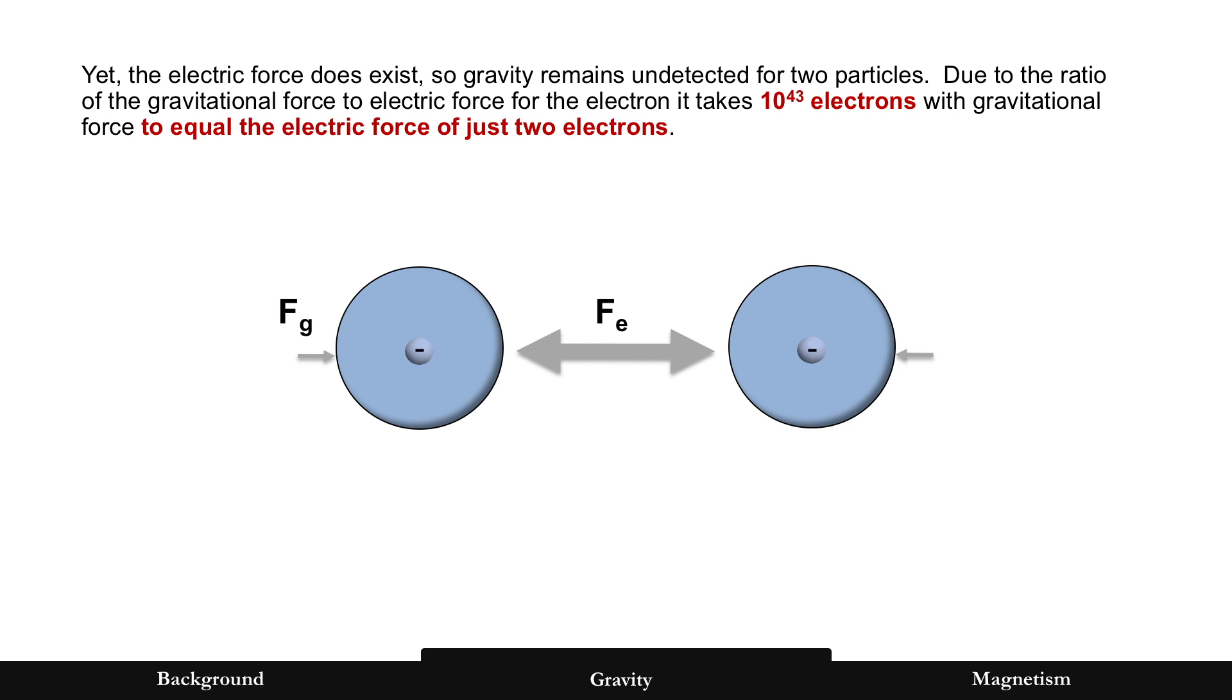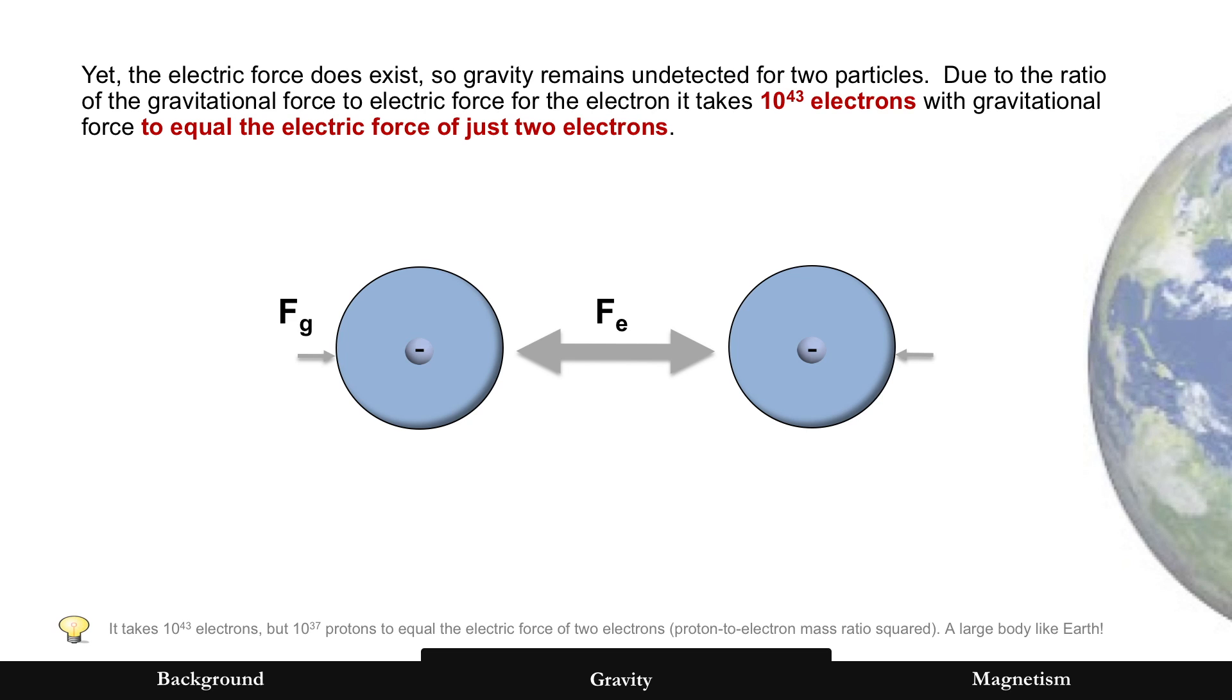But the electric force does exist. So gravity remains undetected for two particles. And remember that ratio, the ratio of the gravitational force to electron force. It would take 10 to the 43 power number of electrons with gravitational force equal just the electric force of two electrons. We're going to be showing atoms later. So it's worth noting that it takes 10 to the 37th power of protons equal that same electric force of two electrons. You do that by taking the proton to electron mass ratio and squaring it. Anyway, what has that number of protons and electrons and atoms? Well, a large body like Earth.